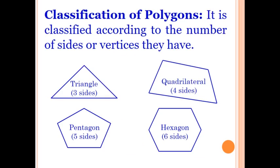Classification of polygons: The polygons are classified according to the number of sides or vertices they have. A triangle is a polygon having three sides. Quadrilateral has four sides, pentagon has five sides, and hexagon is a polygon having six sides.